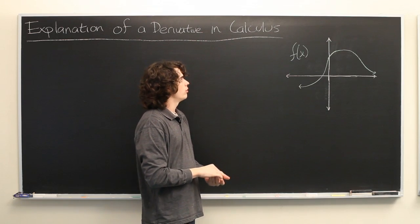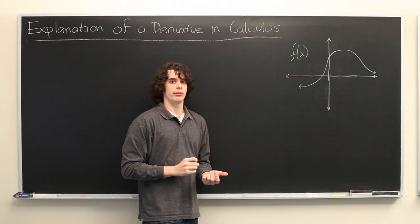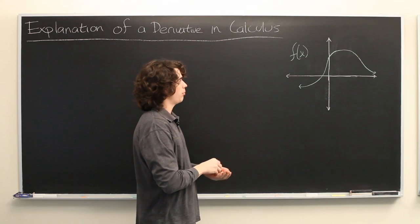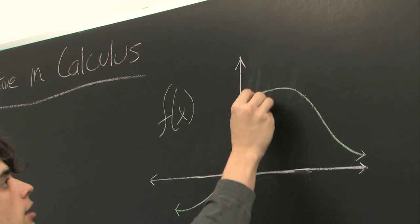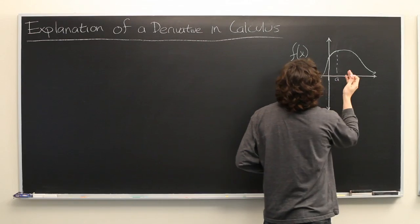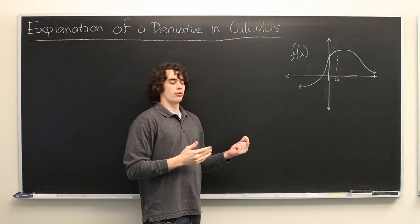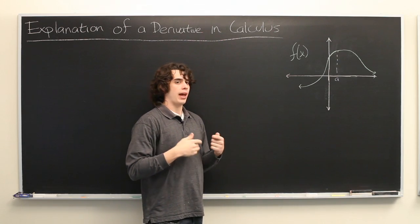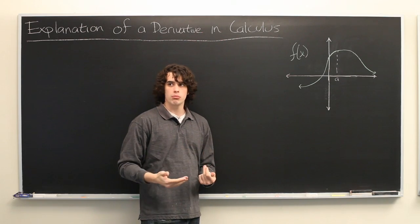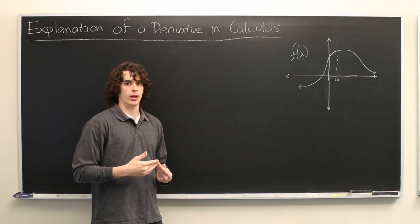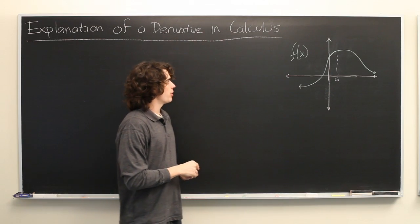What we want to know is, what is the derivative of this function at a point? We'll call it a, just some arbitrary value. What is the derivative at this point? How do we compute it? What does it mean conceptually? And how can we visualize it? So we'll start with the visualization.